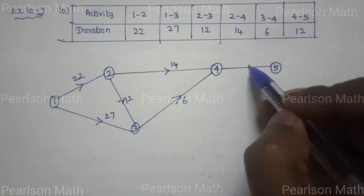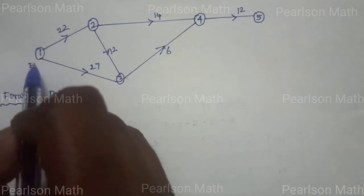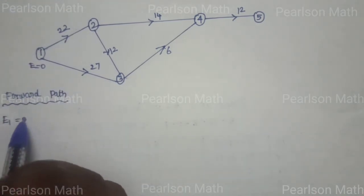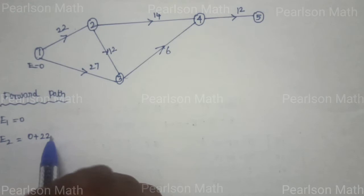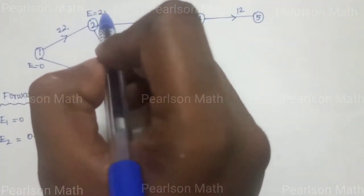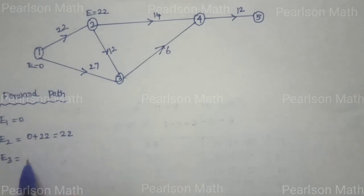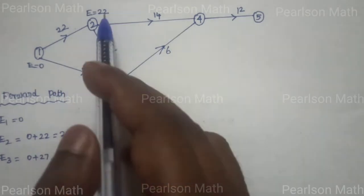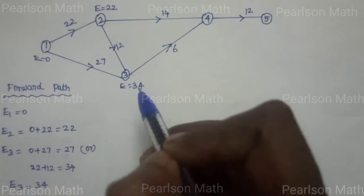Forward path: initial start, early start. E1, E2 for activity 1 to 2 is 0 plus 22 equals 22. So E2 equals 22. E3: we have 0 plus 27, which equals 27. The duration gives us E3 equals maximum number, then E is equal to 34.